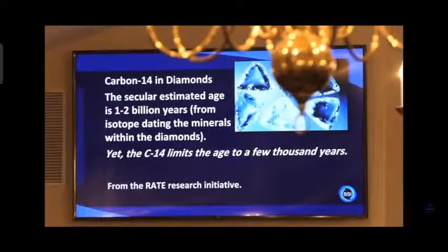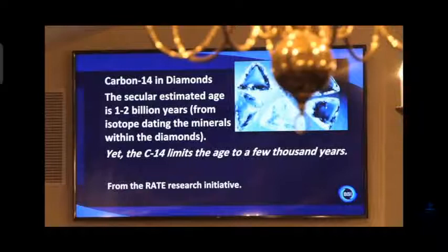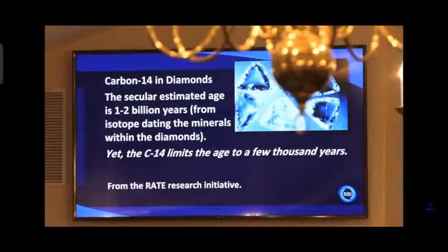Carbon dating is based on carbon-14. Most carbon is carbon-12, but there's a variety called C14 — carbon-14 — which has two extra neutrons in the nucleus, making it unstable. It will spontaneously change into nitrogen all by itself; you don't have to do anything. C14 will just change into nitrogen randomly. But with a large sample, you can tell statistically after a certain amount of time how much has decayed.